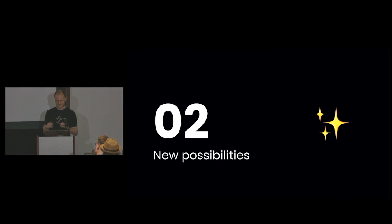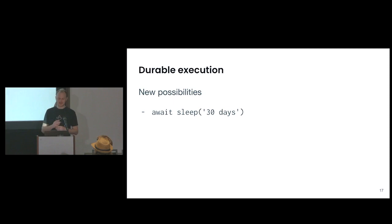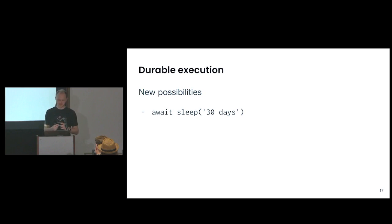A lot of the way we code and design systems is predicated on the fact that the primitives we're building with are normal volatile functions that could die at any time. There are some new possibilities that open up when we have this primitive of the durable function. One of those is sleeping for an arbitrary period of time. In normal code, I can't write a 30-day sleep in production because I don't have confidence my process will be around. In durable execution, I can reliably know that in 30 days my function will continue running and this promise will resolve.